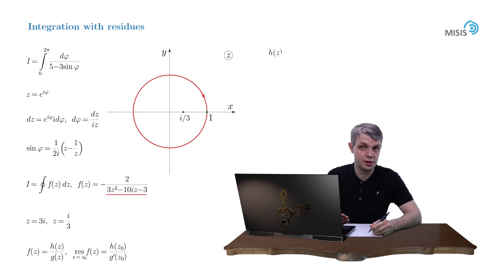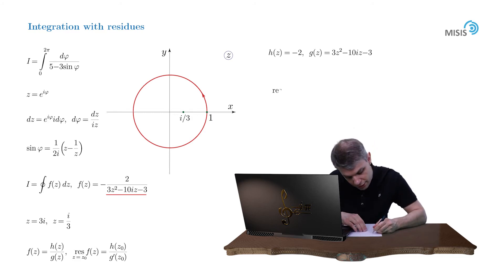Here our h function is minus 2, while our g function is this second order polynomial. This way the residue of our function at point z equals i over 3 is equal to minus 2 divided by the derivative of our polynomial (6z minus 10i) taken at point z equals i over 3. We obtain 1 over 4i.